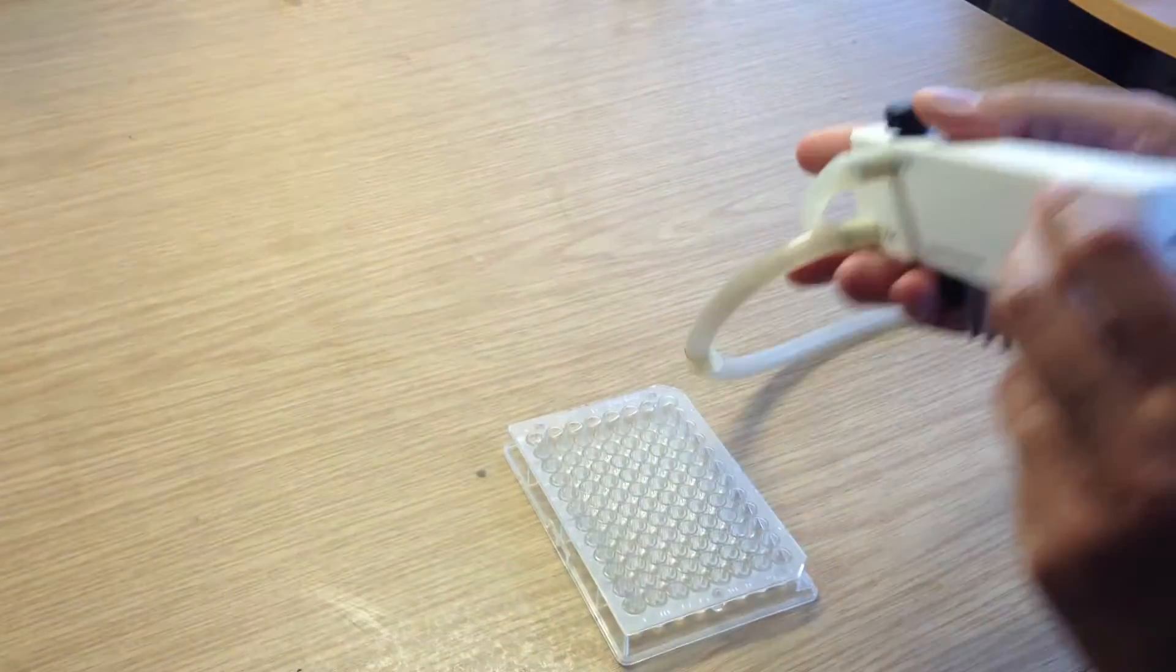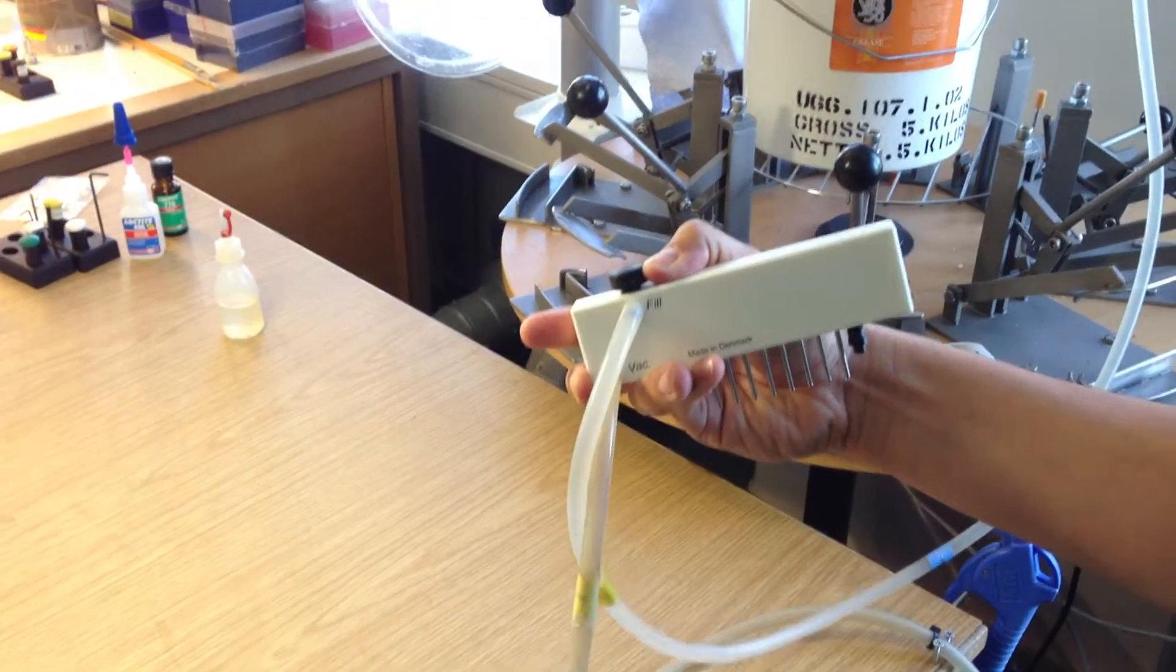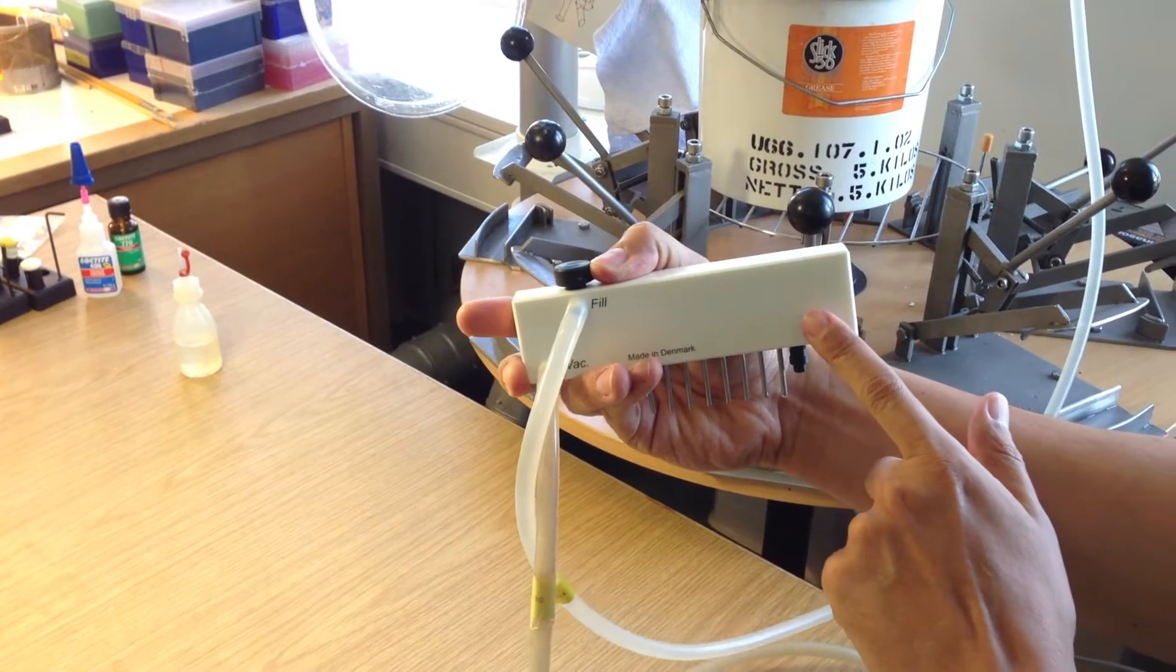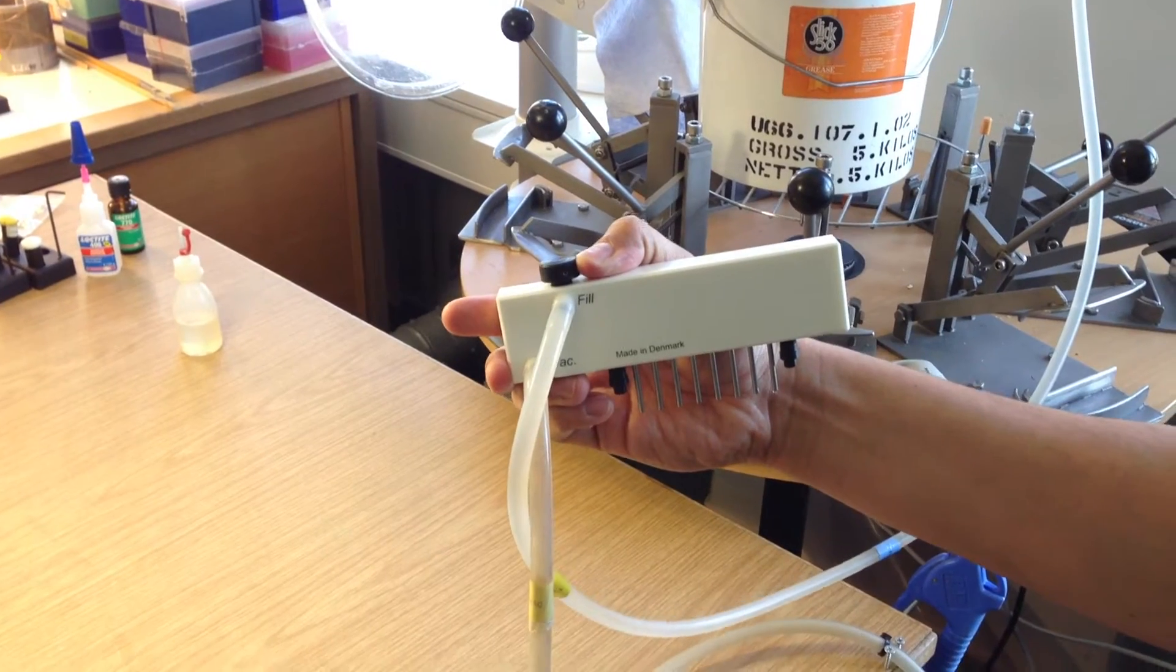So the way the system works is that you're going to put the silicone tubing on the fill for the washing solution bottle and on where it's written VAC for the trap and for the vacuum pump.